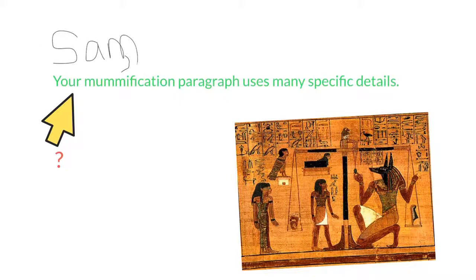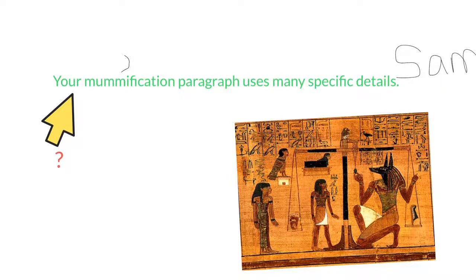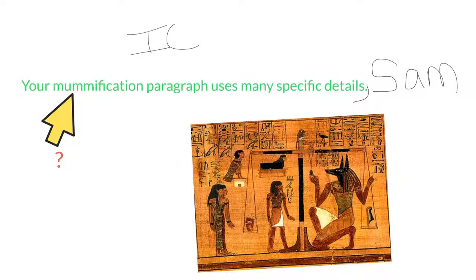That's not the only place I could put my direct address. I could also move it to the end of my sentence. The comma now separates my independent clause — 'your mummification paragraph uses many specific details' — from my direct address, Sam, and the end punctuation goes at the very end. So the beginning and the end of the sentence are both options.